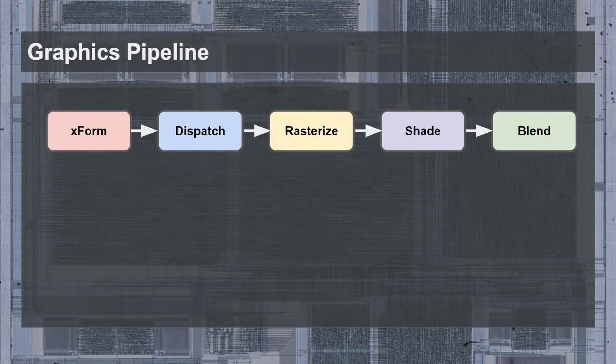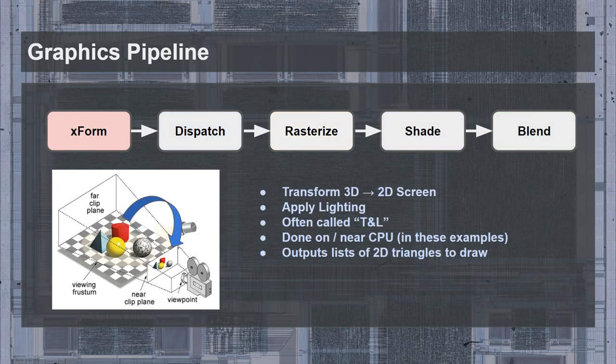To understand this, let's consider an idealized graphics pipeline. For simplicity, we will only consider the case of drawing triangles, where any arbitrary 3D object can always be decomposed into a number of triangles. The first stage is the transform stage, where we take the 3D objects and project them onto the screen. This is also where vertex lighting calculations are applied, which is why both processes are typically grouped into TNL, or Transform and Lighting. This stage outputs a list of 2D triangles to draw.